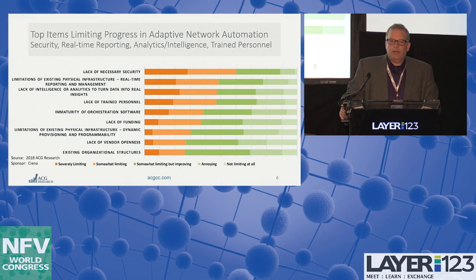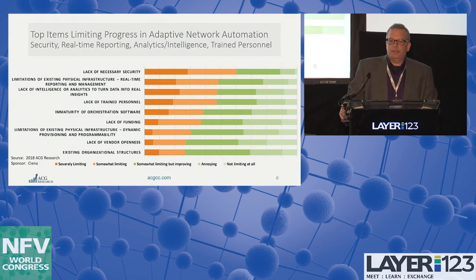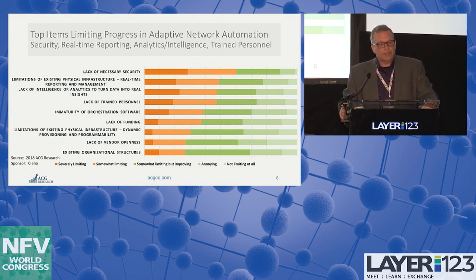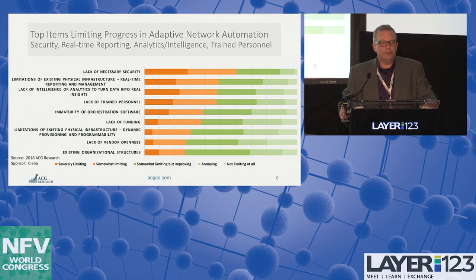Next was: what is holding you back? What are the limits in terms of achieving your adaptive network automation? We asked folks to rate things as severely limiting, somewhat limiting, or somewhat limiting but improving. Right at the top of the list were security concerns. With automation, you have the opportunity to do security right — but also the opportunity to do it wrong really fast and a lot. That's what has people nervous on the security side.